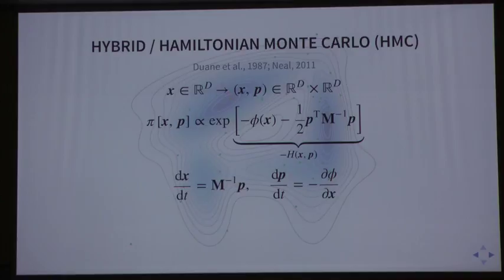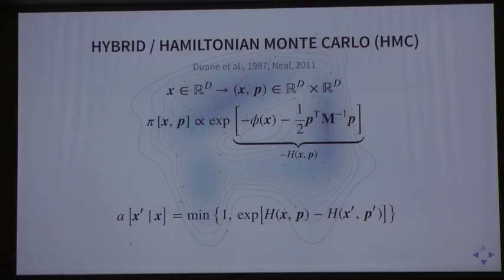We look at the change in energy across that trajectory. The nice thing about this dynamic is that it's fundamentally energy conserving. The approximation of it is not quite, but we can correct for the bias introduced by that by including this Metropolis acceptance step. Because of the approximate energy conservation, we're very likely to accept, providing we appropriately choose the integrator.